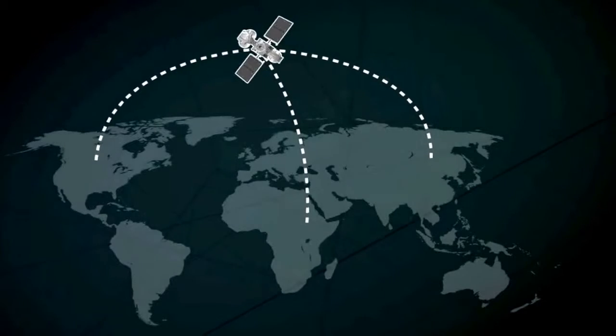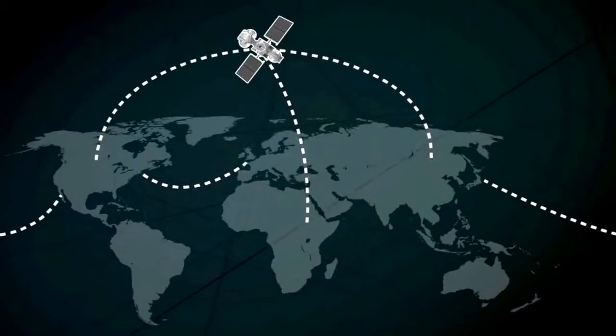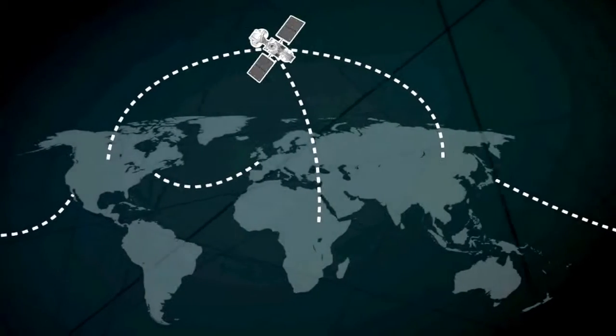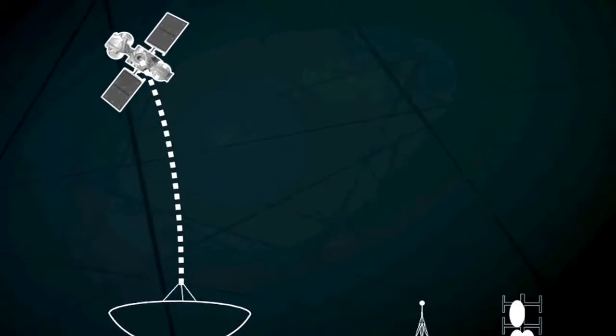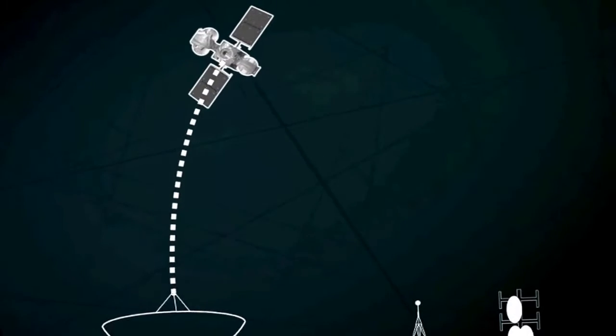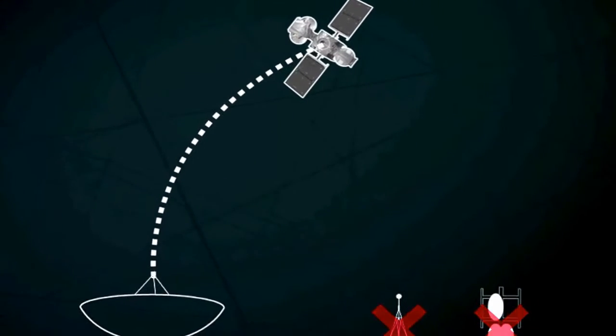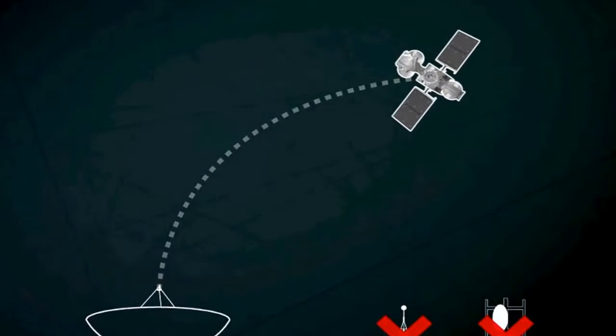Satellites and submarine cables transmit long-distance phone calls and those between continents. Special phones that link directly to satellites are valuable in remote areas or after a natural disaster, when the normal infrastructure has been damaged.